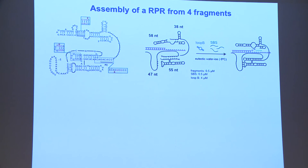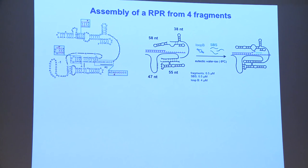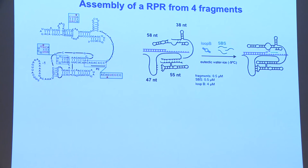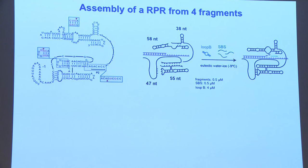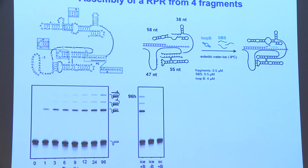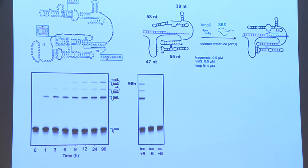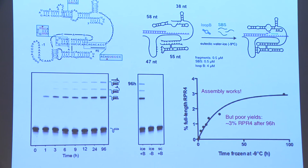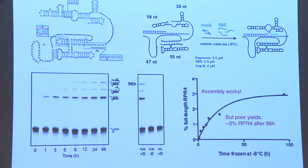As an initial experiment, we split the ribozyme into four chunks, each between 40 and 60 nucleotides long, and used the hairpin ribozyme — a ligase-slash-endonuclease enzyme that carries out transesterification reactions. We used the ice phase to drive the reaction. You can get full-length assembly in about 96 hours, but the yields are really not inspiring — just 3% yield. To set up a replication cycle, that is really not sufficient.